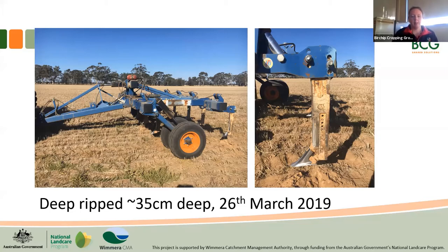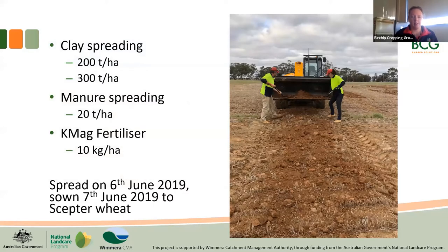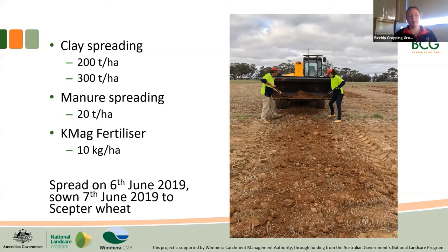The other treatments involved in the Lubeck trial were clay spreading at two different rates — 200 tonnes per hectare and 300 tonnes per hectare, in line with what other farmers were doing in the district. We also spread chicken manure at 20 tonnes per hectare, and used a K-Mag fertiliser blend at 10 kilograms per hectare down the fert boot at seeding. This was because tissue tests the year before showed potassium-magnesium ratios were out and plants were quite deficient in magnesium, however we didn't see a lot of results from this fertiliser blend.